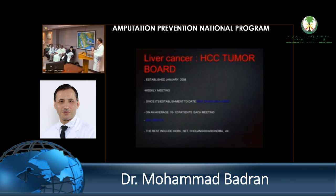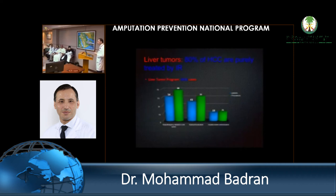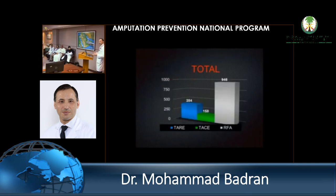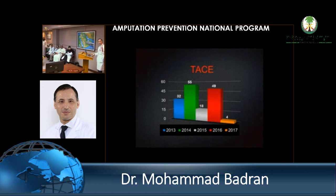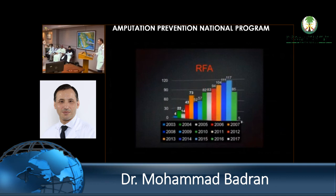Liver cancer — this is a cancer hospital, primarily. We have a tumor board looking at cancers, mainly hepatocellular carcinoma. Ninety percent of hepatocellular carcinoma is treated by interventional radiology alone. We do variable procedures: radiofrequency ablation, chemoembolization, and radioembolization. We've done over a thousand cases so far. You can see radioembolization and chemoembolization both increasing over the years. Radiofrequency ablation — we put the needle in the tumor and we burn it — has also been increasing since 2008.